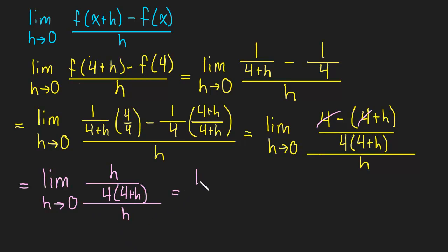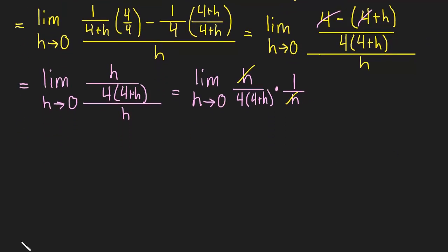And now this is the same thing as multiplying by the reciprocal. So we have h divided by 4 times 4 plus h times 1 over h. So this h down here, instead of dividing by it, we're multiplying by the reciprocal. We're allowed to do that. And now these h's cancel. And what are we left with?